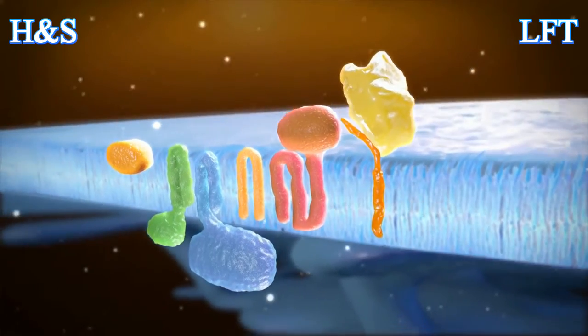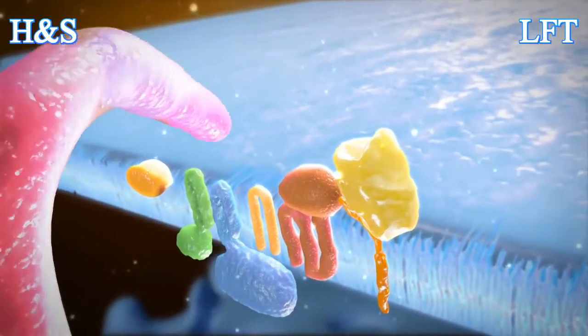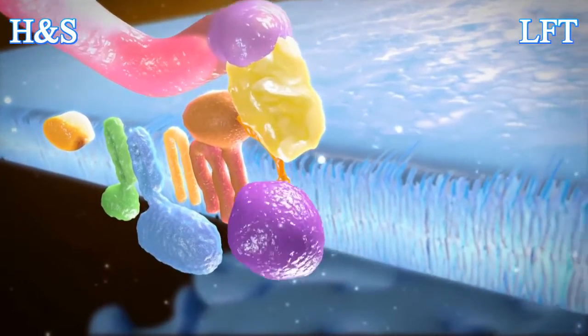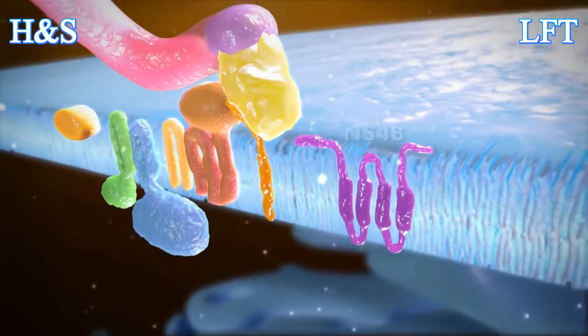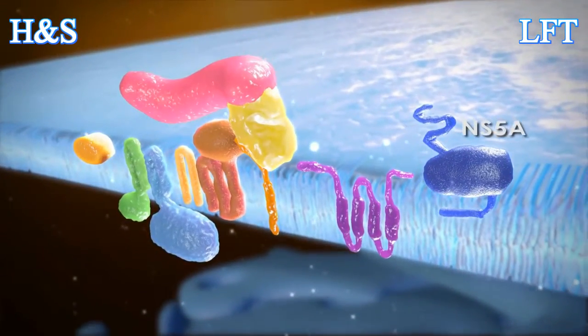Once released from the polyprotein, NS3 acts as a knife, cleaving each of the remaining four proteins from the polyprotein, like slices of bread from a loaf. This leaves the separate proteins free to perform their specific roles.